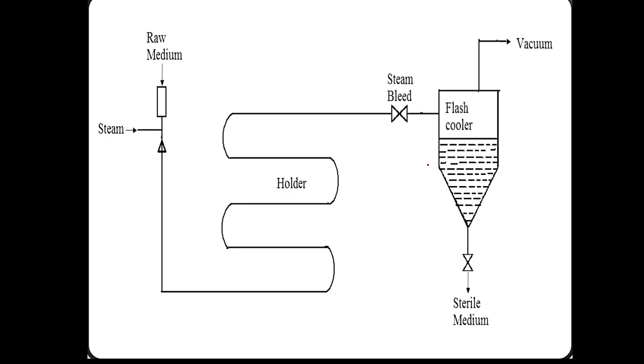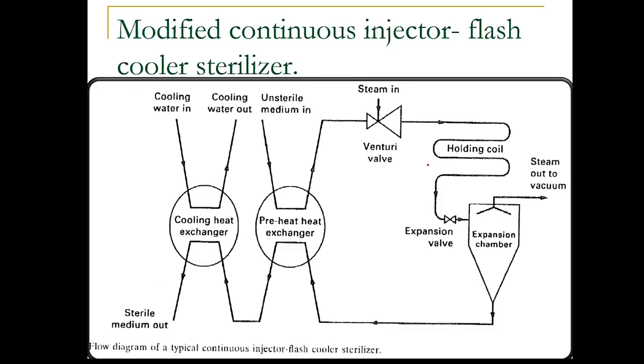Now this is a modified injector flash cooler. Here the raw medium is added in the preheat exchanger. The steam is added, holding is there, the expansion chamber is there, and after the heat exchanger it also goes for the cooling heat exchanger. So two types of exchangers are required: cooling and a preheating heat exchanger.